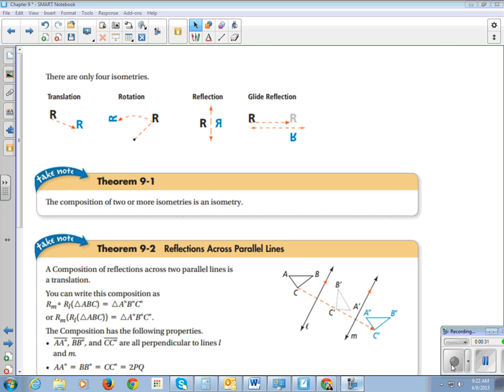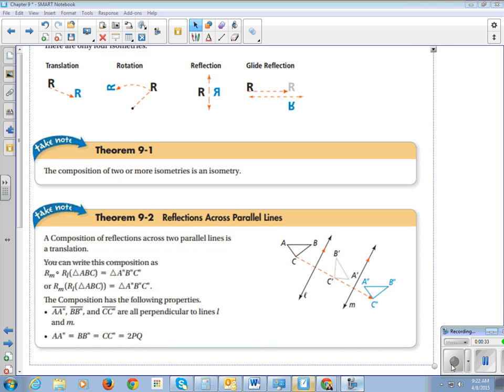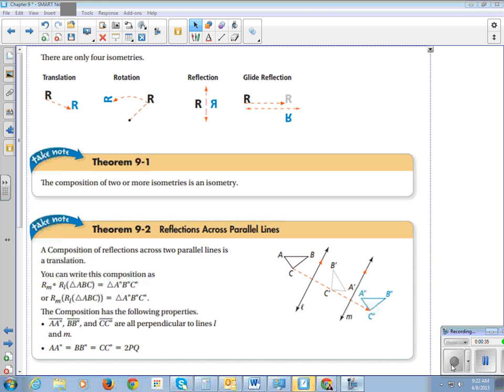All right, so thank goodness there are only four isometries. Translation, just from one spot to another spot. Rotation. Reflection, like your mama, mama staring back at me. That's her favorite song. And then the glide reflection, which is, if you look, glide reflection, where we move and we reflect. Glide, glide and reflect.